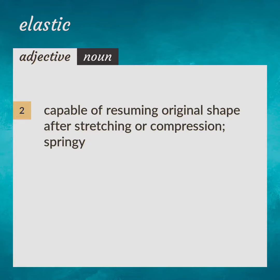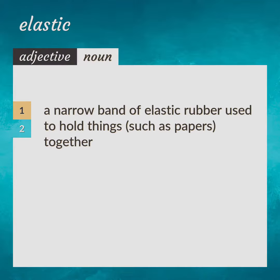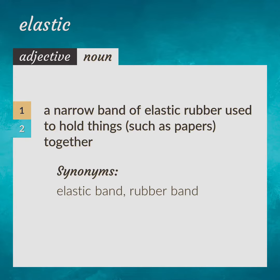Capable of resuming original shape after stretching or compression. For example: an elastic band — a narrow band of elastic rubber used to hold things, such as papers, together. Synonyms: elastic band, rubber band.